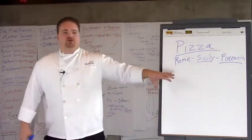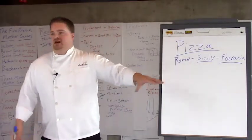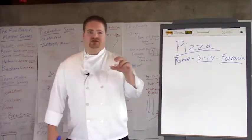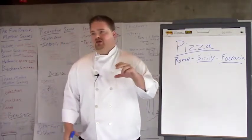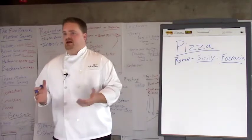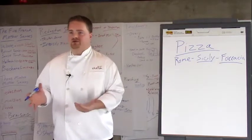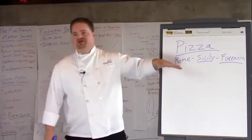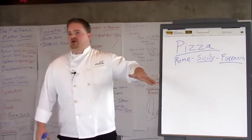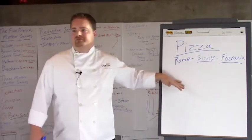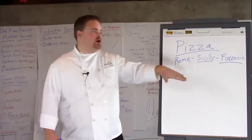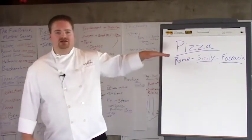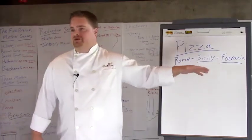This raises a couple of issues when trying to make this at home, because you have a thicker piece of dough. As Americans, we like to top it with all sorts of different stuff. Then you have the issue of: how do I get my pizza crust brown on the bottom while cooking it all the way through, and still be able to top it?